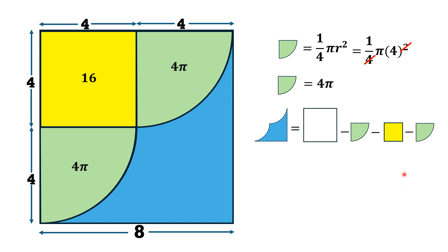Substituting the values, blue shaded area will be equal to 64 which is the area of this large square minus 4π that is the area of one quarter circle minus 16 that is area of yellow square and minus 4π that is area of other quarter circle.